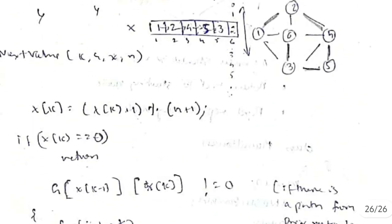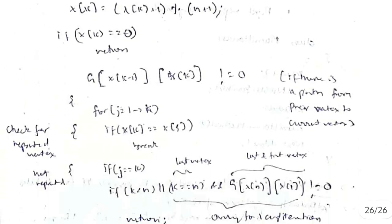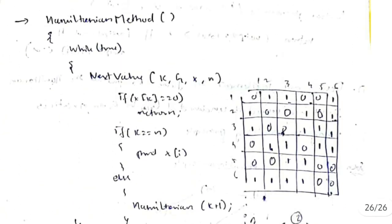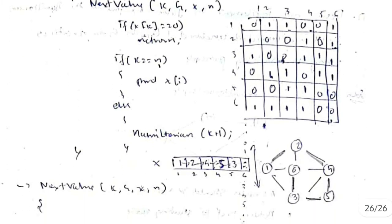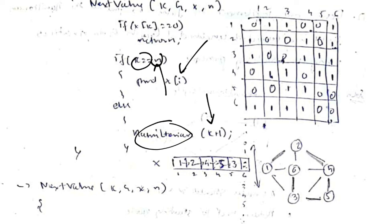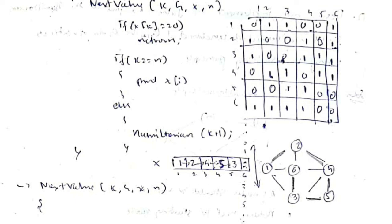When nextValue returns a valid vertex and k equals n, all vertices are visited, so we print the sequence as a complete Hamiltonian cycle. Otherwise, we recursively call for k+1 to find the next vertex. We keep trying until either a valid cycle is found or all combinations are exhausted. By repeating this for all possible combinations, we find and print all valid Hamiltonian cycles in the graph.